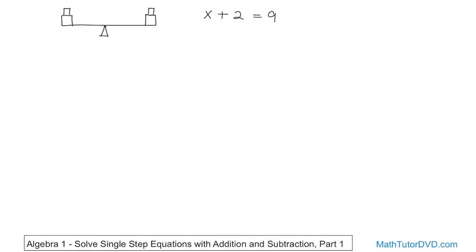There's really only one value of x that, when I add 2 to it, gives me 9. And the value of x here is 7. If you put 7 in, add 2, you get 9 — it works. Any other value of x doesn't work. But this is a simple equation, so we're going to start learning how to solve these things methodically, because with more complicated equations you can't just look at it and figure out the answer — you'll need to do these steps.